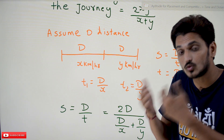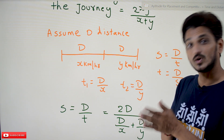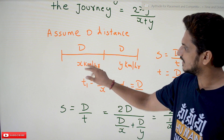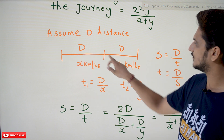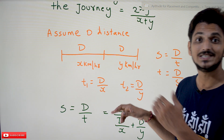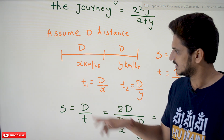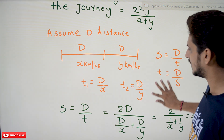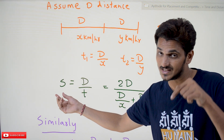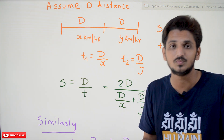So the total distance he traveled is 2d. The total time taken is t1 plus t2. Speed equals distance by time, so we compute total distance divided by total time. This speed is what we call average speed.